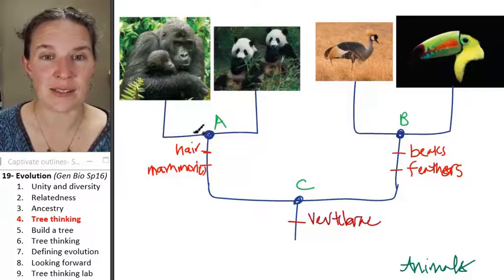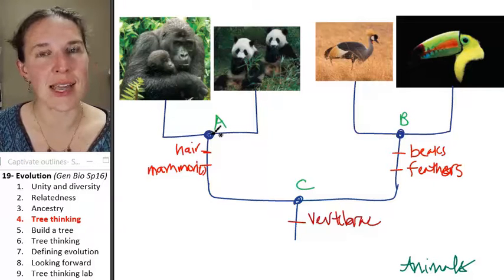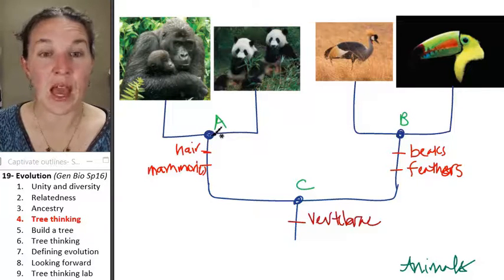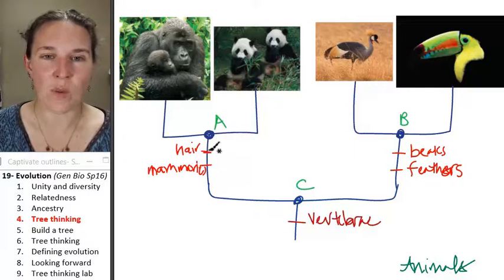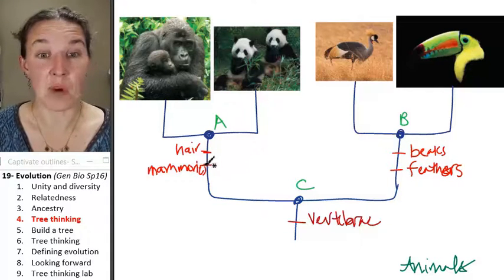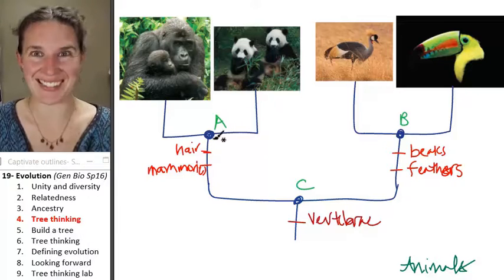And you would be like, hello, it's ancestor A. I could say, tell me about ancestor A. Ancestor A, like what do you think it looked like? Probably had hair and mammaries. Got it?